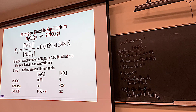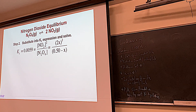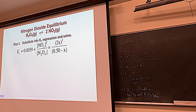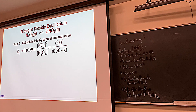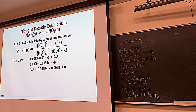Setting equal to K = 0.0059: (2x)² over (0.50 − x) = 0.0059. Unlike the previous problem, the denominator is not squared, so we can't take the square root of both sides. This one requires the quadratic formula or the calculator's solve function. Rearranging gives a standard quadratic: 4x² + 0.0059x − 0.00295 = 0.